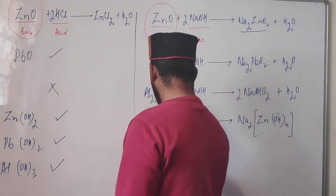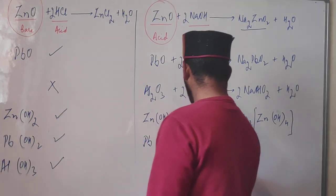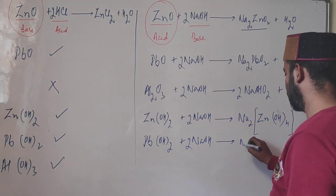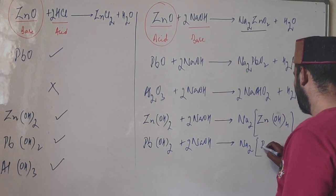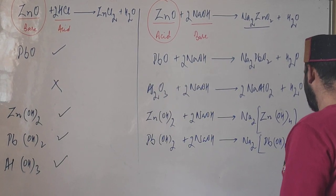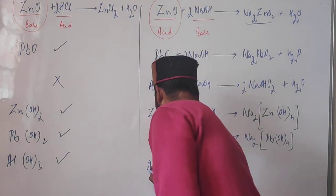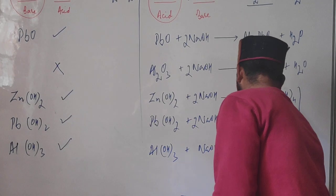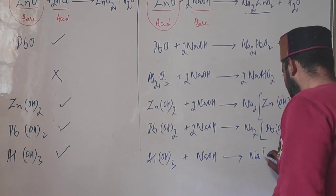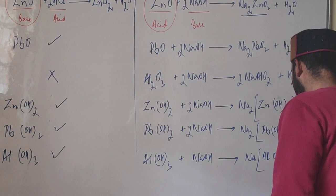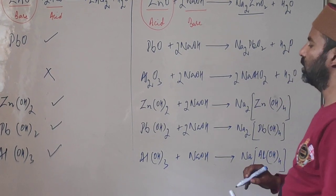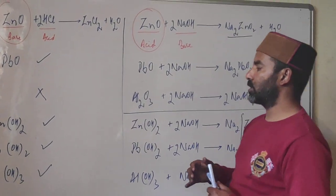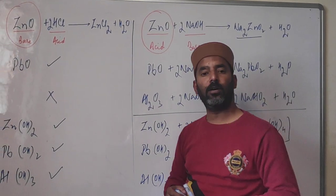Lead hydroxide Pb(OH)2 reacts with NaOH to form sodium plumbite, which as a complex salt can also be written as Na2[Pb(OH)4]. Aluminium hydroxide Al(OH)3 reacts with NaOH to give sodium meta-aluminate, which can also be written as Na[Al(OH)4]. This was a very important topic and our last topic of Unit 4.